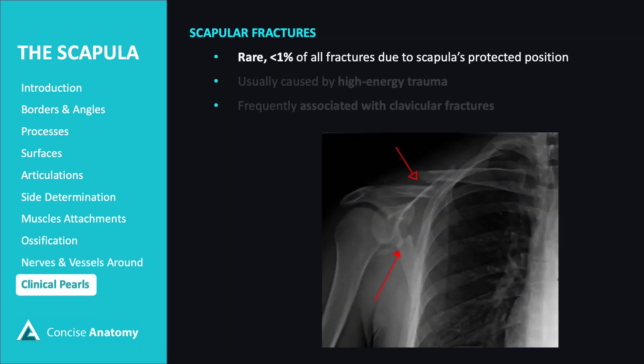Scapula fractures are relatively uncommon injuries, accounting for less than one percent of all fractures, given the scapula's protected position by surrounding muscles. These fractures typically result from high-energy trauma, such as motor vehicle accidents, and are often associated with clavicular fractures, as shown in the image.